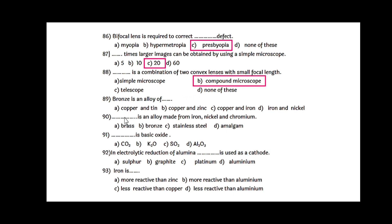Bronze is an alloy of copper and tin. Stainless steel is an alloy made from iron, nickel and chromium. K2O is a basic oxide. In electrolytic reduction of alumina, graphite is used as a cathode.